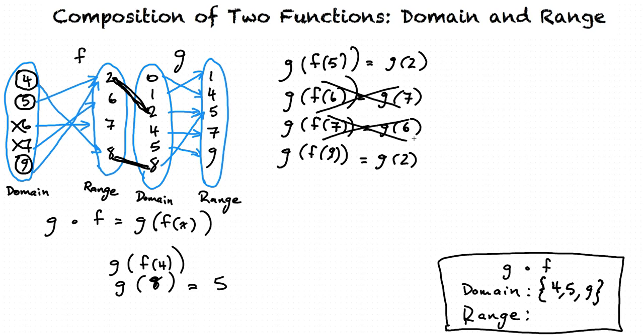Now to find the range, we simply plug in these values that we got in our final domain, 4, 5, and 9, and find the y values. We've already done it for g of f of 4. We already mapped this out to g of 8, which equals 5. So we can tell that 5 is going to be in our range.